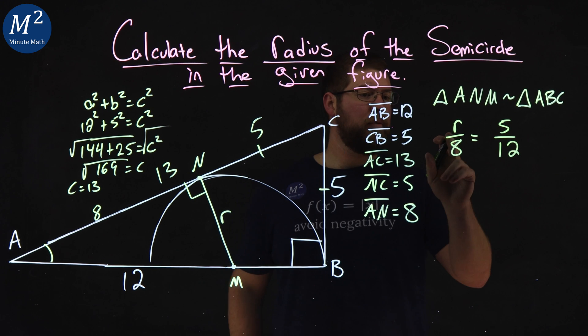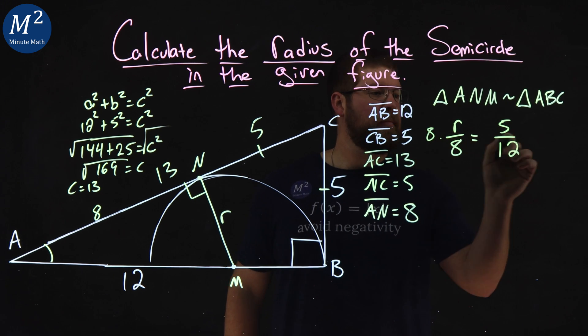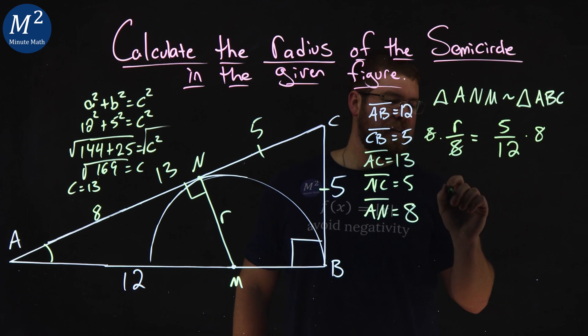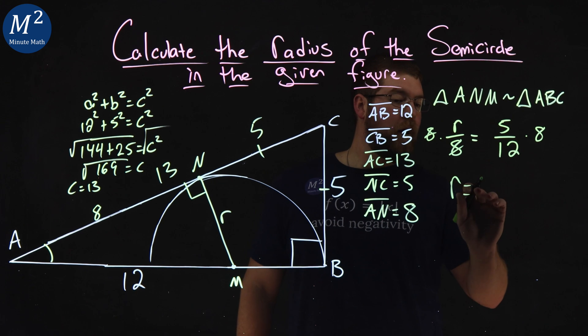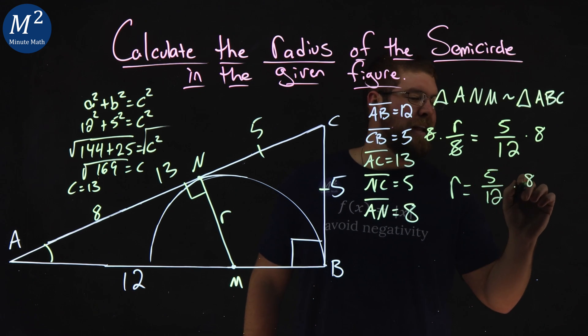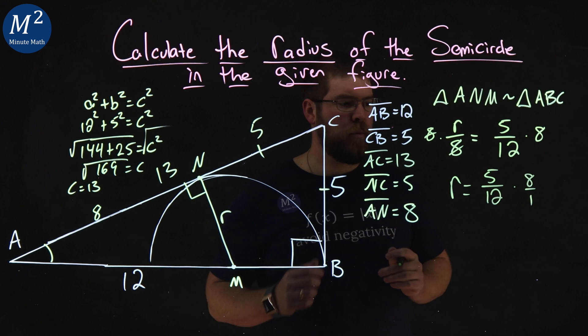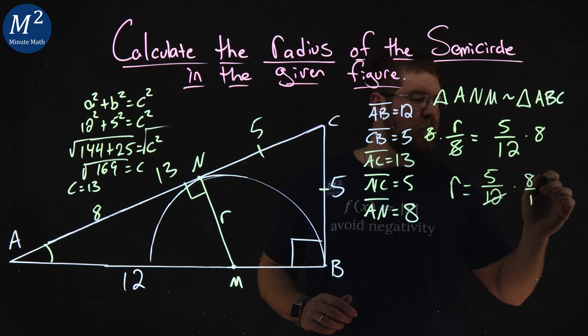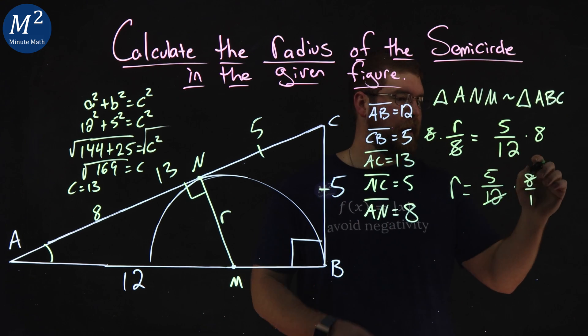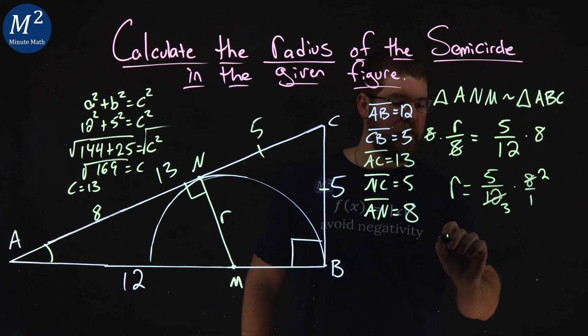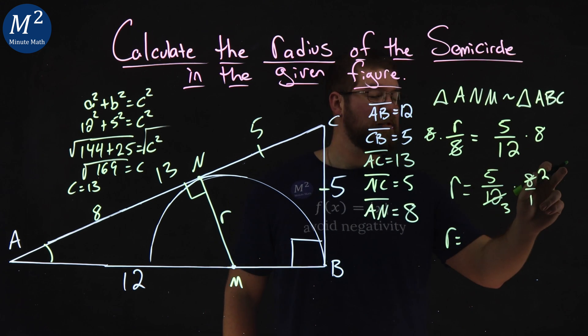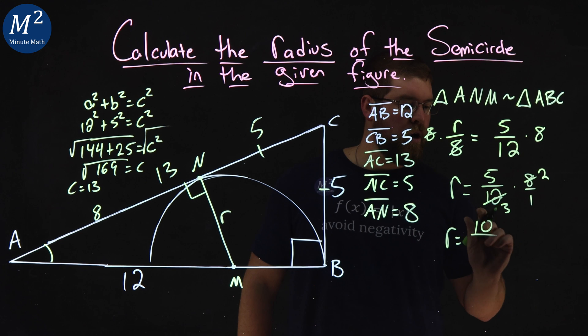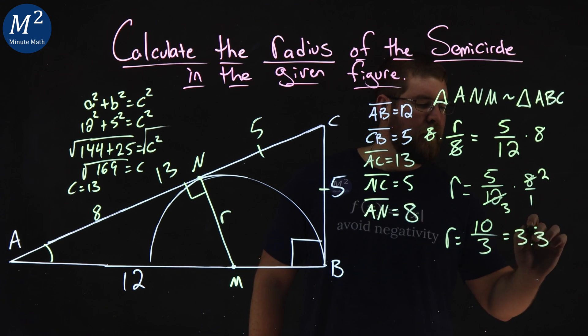Now, to simplify this, we want to multiply 8 to both sides. You could cross multiply, but I can do it like this. R is 5 over 12 times 8 over 1. Simplify where we can. 8 and 12 are both divisible by 4. 8 becomes a 2, 12 is a 3. So, R equals 5 times 2, which is 10, over 3. Or, that's equal to 3.3 repeating.